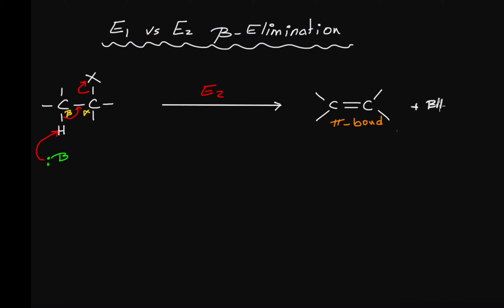So we get the alkene product plus BH plus and X minus. As you can see, for E2 — similar to the SN2 mechanism — bond forming and bond breaking happen all at the same time. There is bond forming between the base and hydrogen, bond breaking between the carbon and hydrogen, bond forming between carbons to form the pi bond, and bond breaking between the carbon and the halogen. So for the E2 mechanism, the reaction occurs in one step.